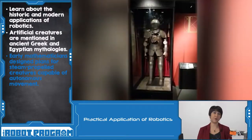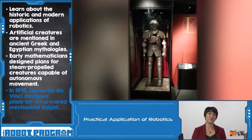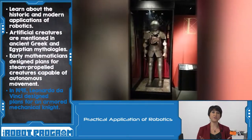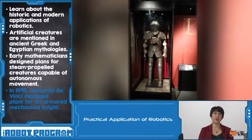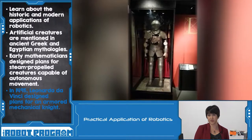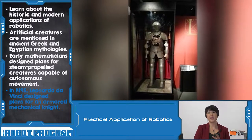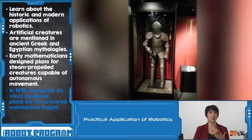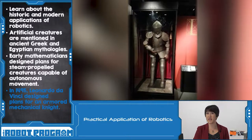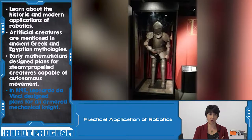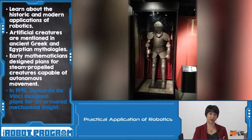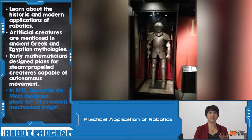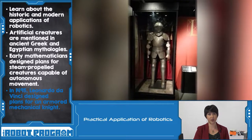Another example, in 1495, was Leonardo da Vinci's plans for a mechanical humanoid robot. He had a design for a knight in full armor that could sit up, wave, move its head, and move its jaw. It's not known whether or not he actually tried to build this robot, but his designs were found later on.